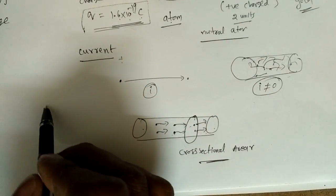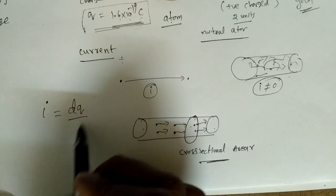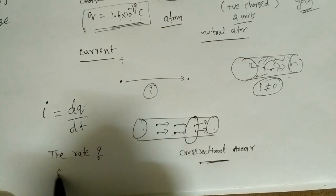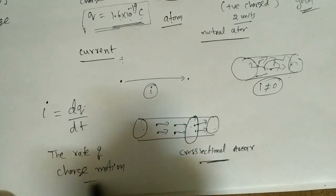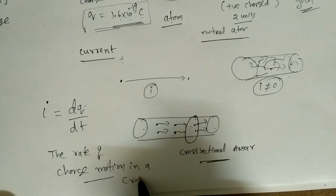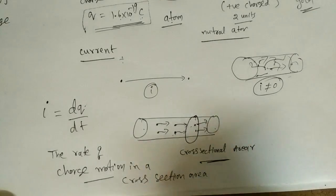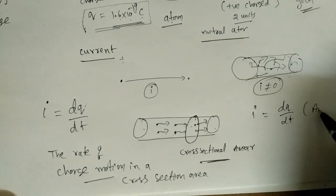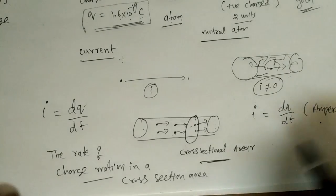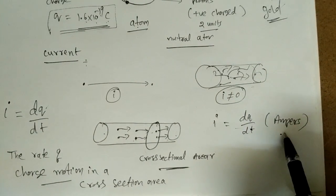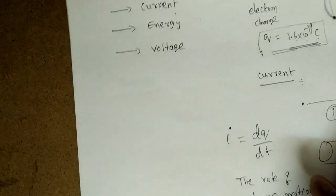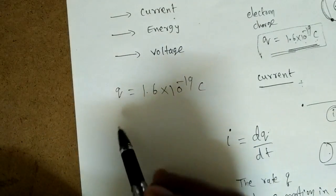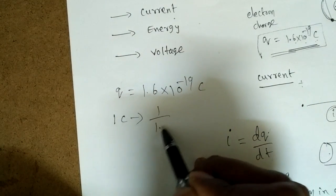In equation form, current is i = dq/dt — the rate of charge motion across a cross-sectional area. The unit of current is amperes (A) in SI units. We know that q = 1.6 × 10⁻¹⁹ coulombs for one electron, which means in one coulomb of charge, the number of electrons is 1 / (1.6 × 10⁻¹⁹).